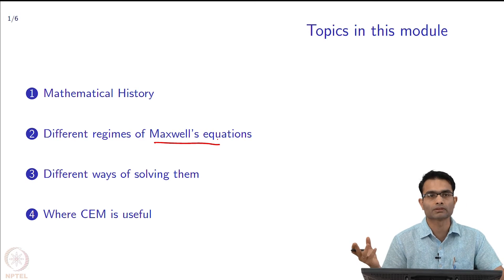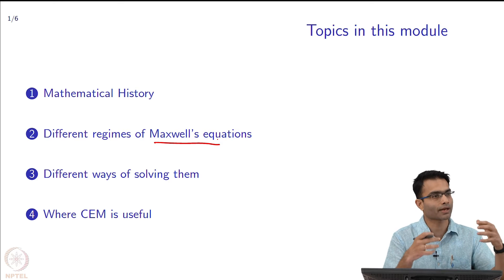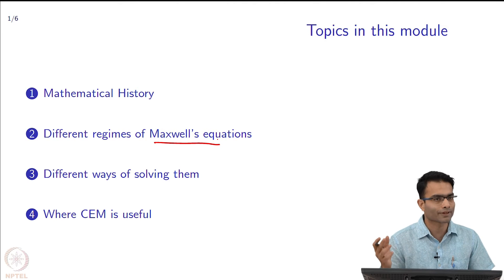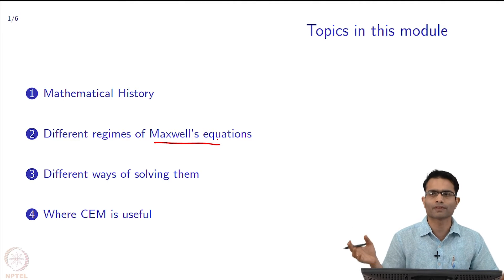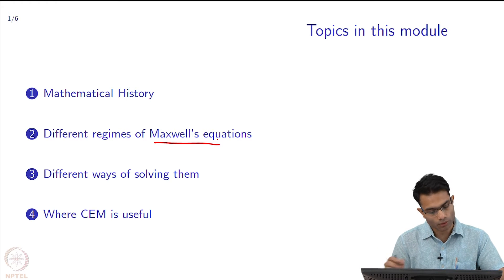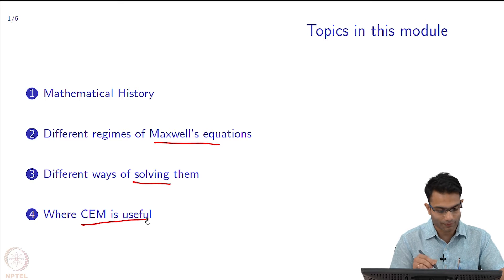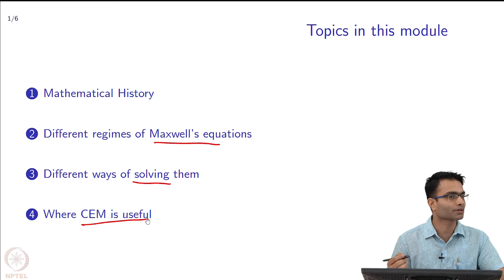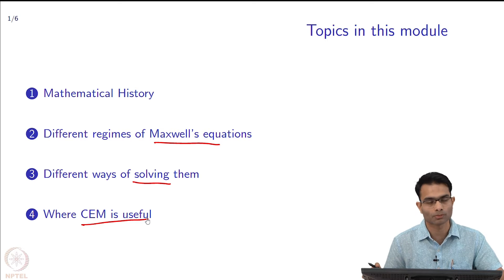When should one use which method? We will find out what are these different kinds of regimes of physics in which different methods get applied. You heard of finite element, finite difference time domain - when should you use which? That comes from some very simple concepts which we will talk about, and also how do we solve them. Finally, this is probably why you are in the class - why is computational electromagnetics useful? Some simple applications I will tell you about.